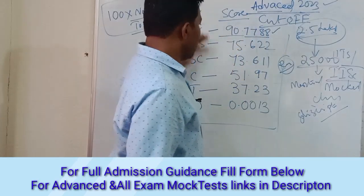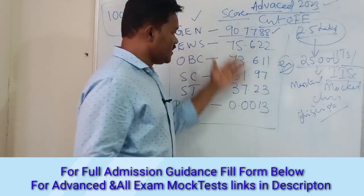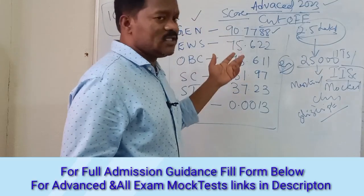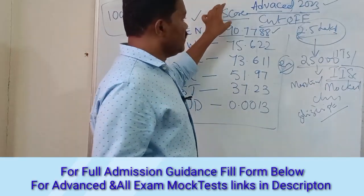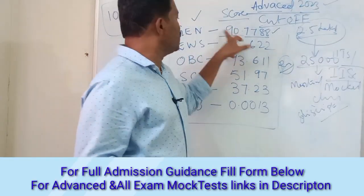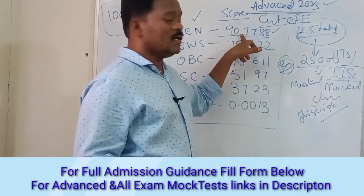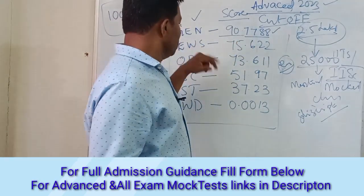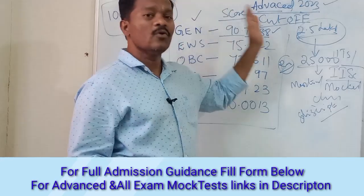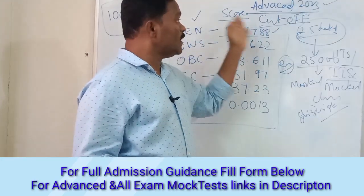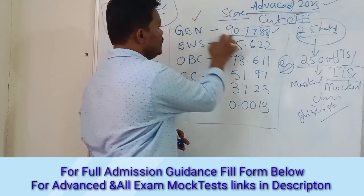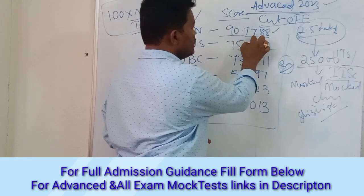In previous videos, you can see scores around 89 or even 88, but 90. So you can see how much of your score is. If you see, for general, the cutoff is 90.77.